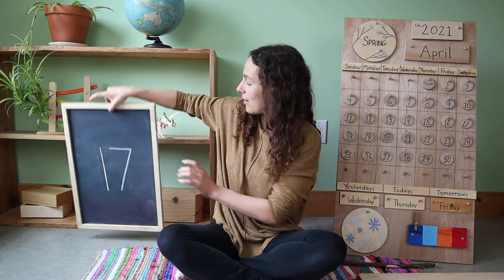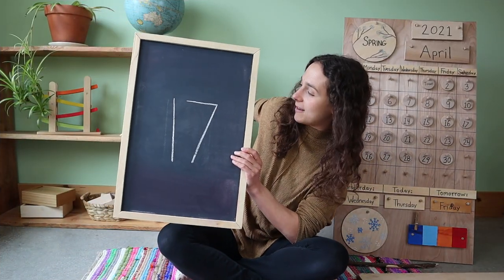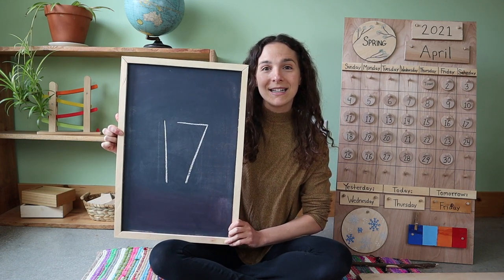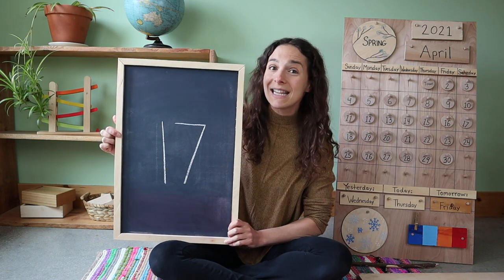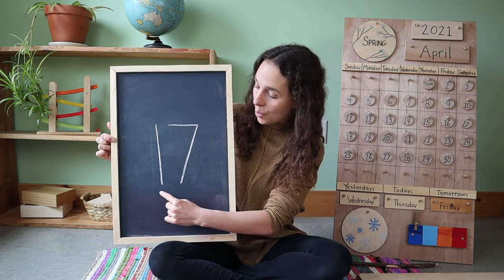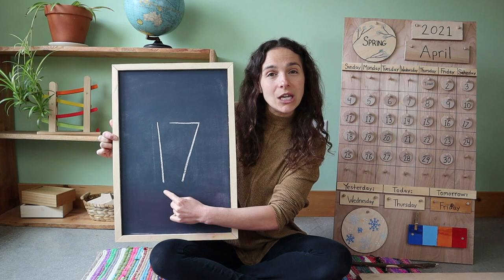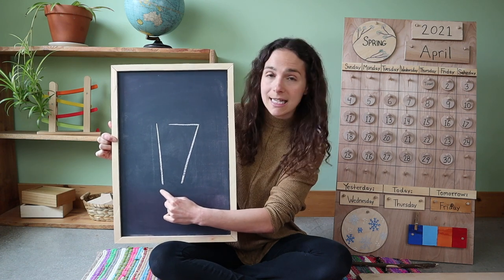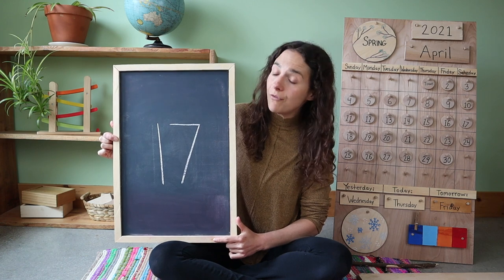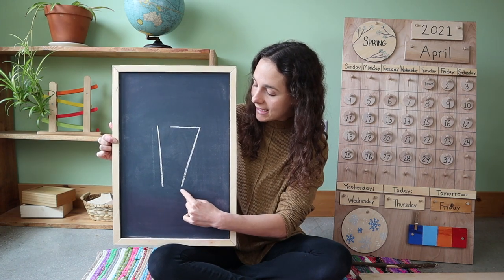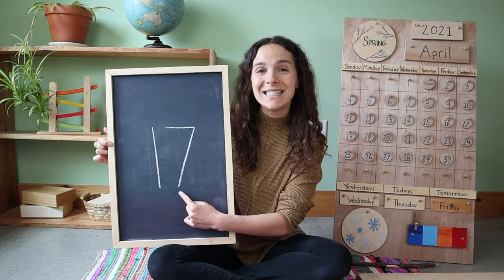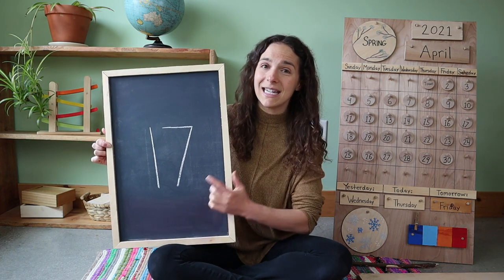Now let's talk about the number of the week. Do you remember what double digit number this is? 17 — that's right. You write the number 17 first with this number. Can you show me with your fingers what number this is? One. That's right. And after you write the number one, you write this number — seven. 17.